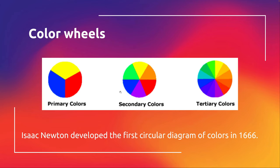Then we have secondaries, which are mixes of those two primaries. So we have green, which is the mix of yellow and blue; orange; and so on. Then you have tertiary colors — which I always say wrong — which are further mixes of those secondary colors.